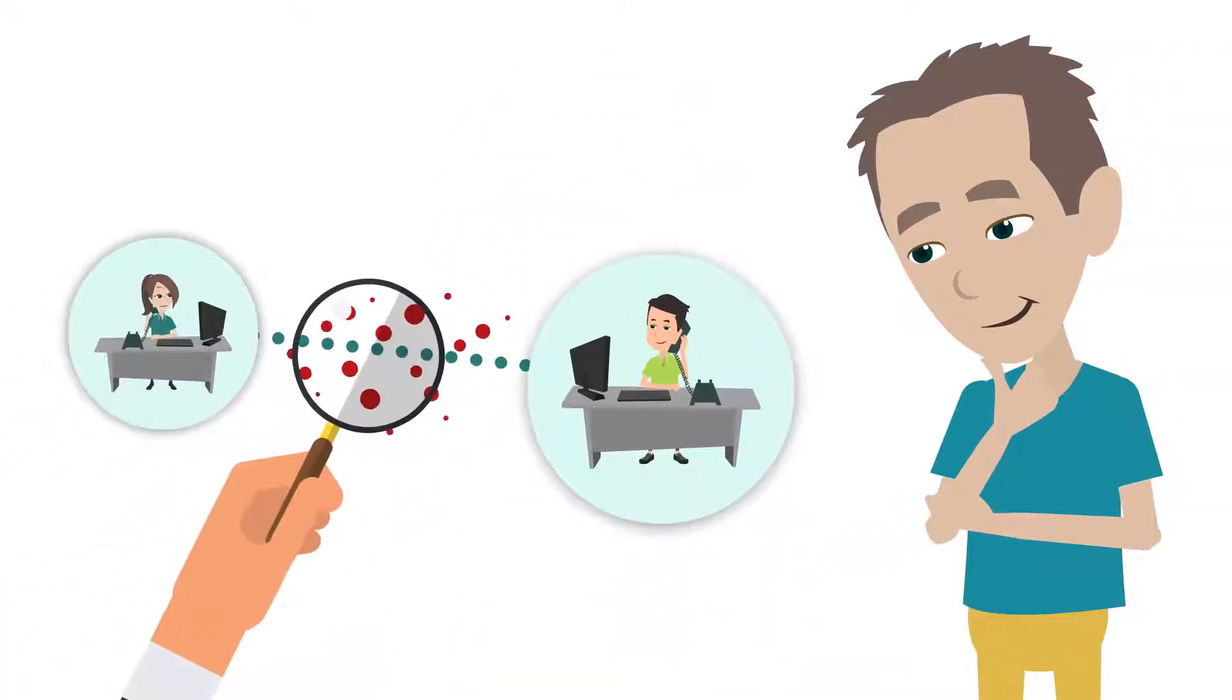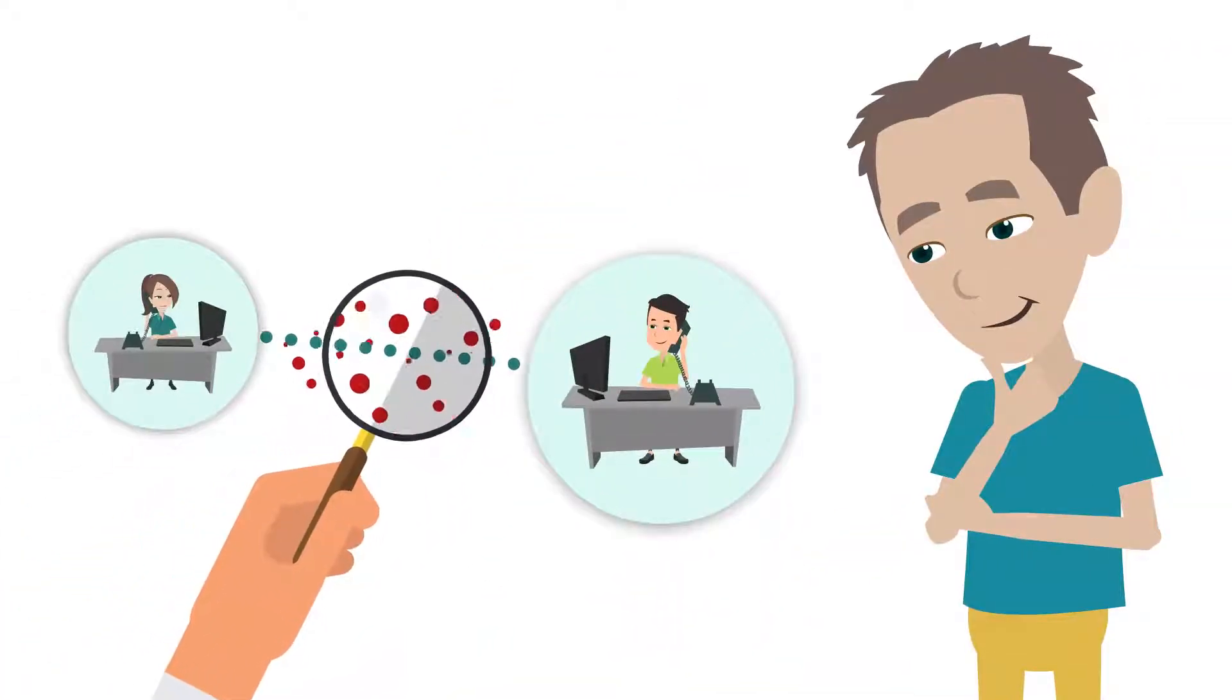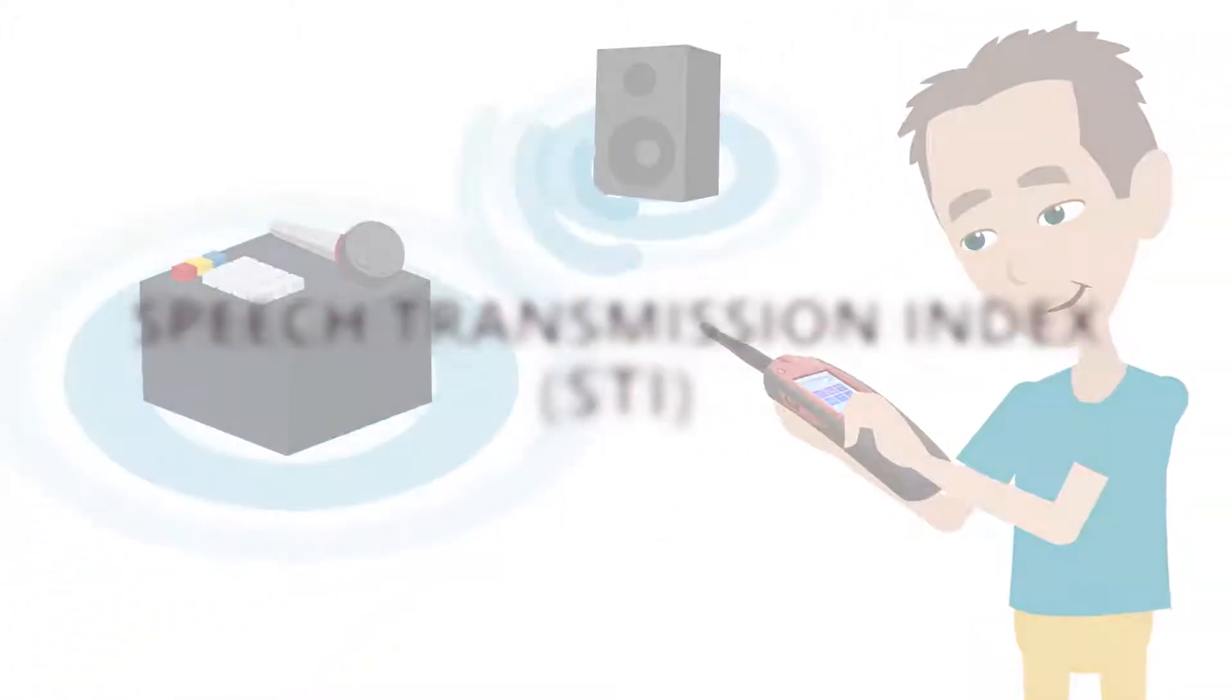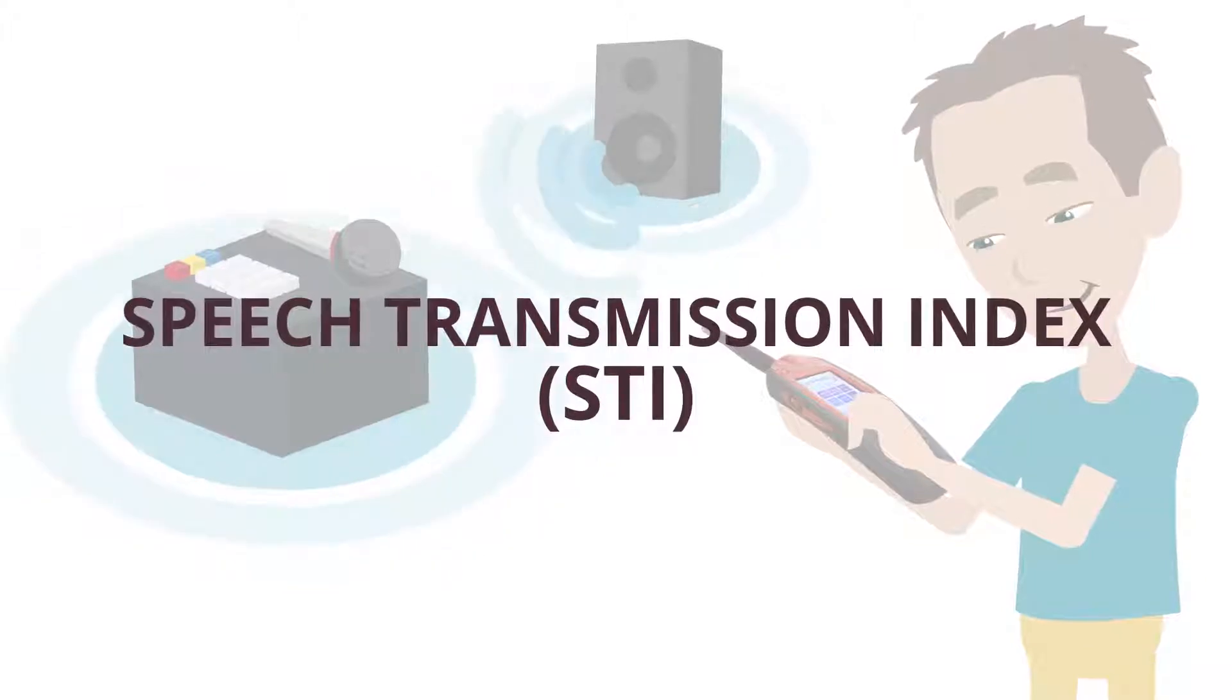Fortunately, there are ways to accurately predict intelligibility based on measurements. By far the most widely used intelligibility prediction method is called the Speech Transmission Index, or STI.